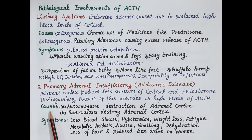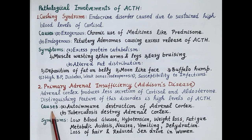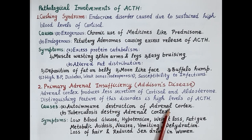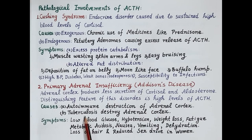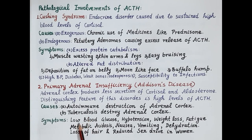Now let's understand the causes of Addison's disease. The main cause is destruction of the adrenal cortex. The extent and severity of destruction determines the symptoms, depending on whether one, two, or all three layers of the adrenal cortex are destroyed. Autoimmune destruction of the adrenal cortex is the most important cause of Addison's disease. The adrenal cortex could also be destroyed by diseases like tuberculosis.